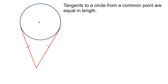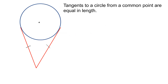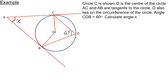Our next circle theorem is that tangents to a circle from a common point are equal in length. Basically, if you have any point outside the circle and you draw two tangents from that point to the circle, these two tangents are equal in length. Here is an example — circle C is shown, O is the centre, and we want to work out angle X. Firstly, this is 90 degrees because AB and AC are tangents to the circle, so these are both 90.